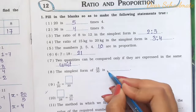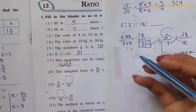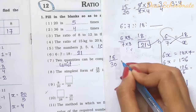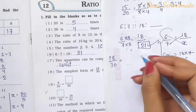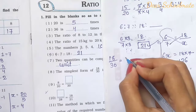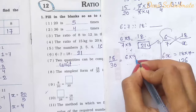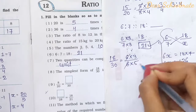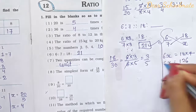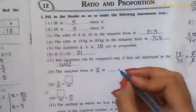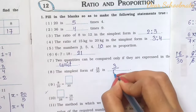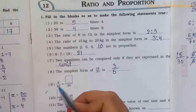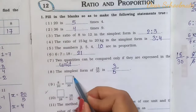Number 8: The simplest form of 18 by 30. We cancel by 3: 3 sixes are 18, and 3 tens are 30. After cancellation we get 3 by 5. So the simplest form is 3 by 5. Number 9: 8 by 20 equals dash by 30.